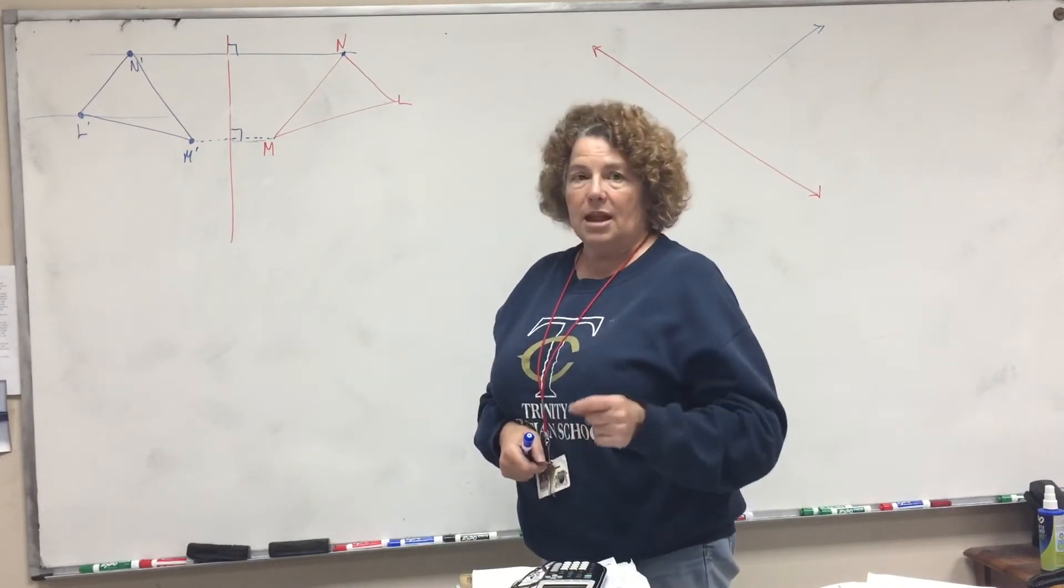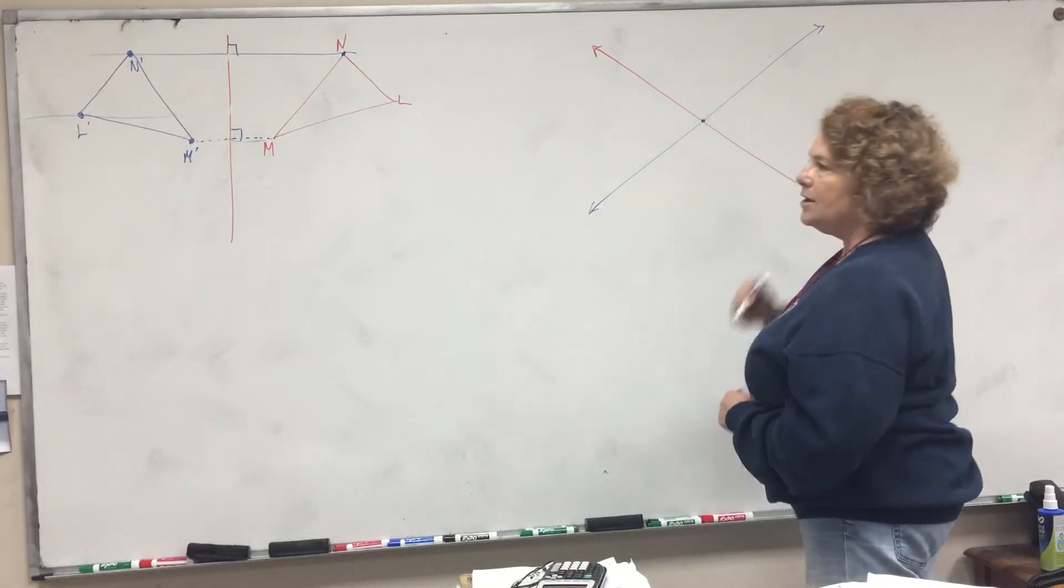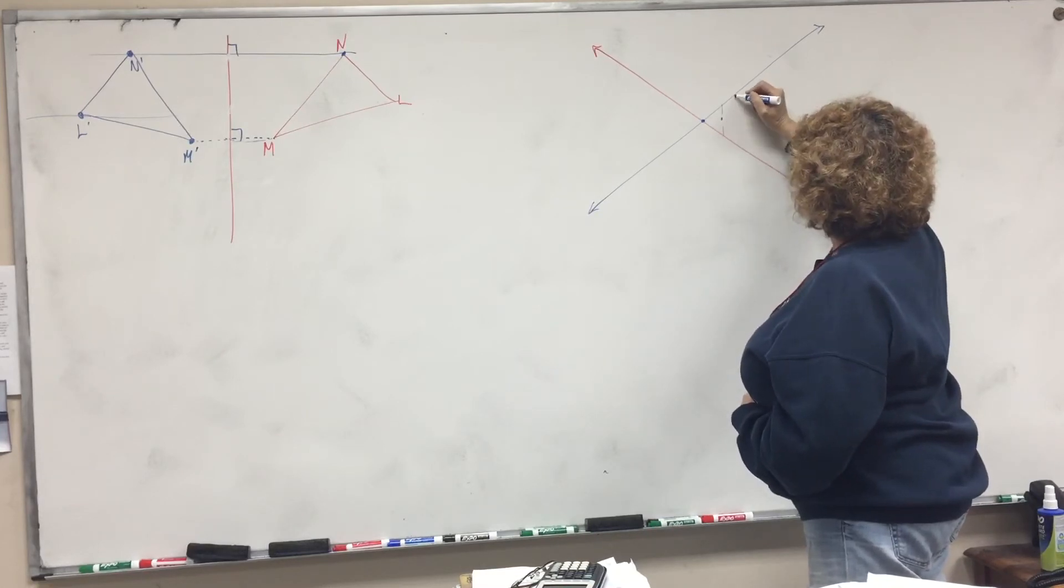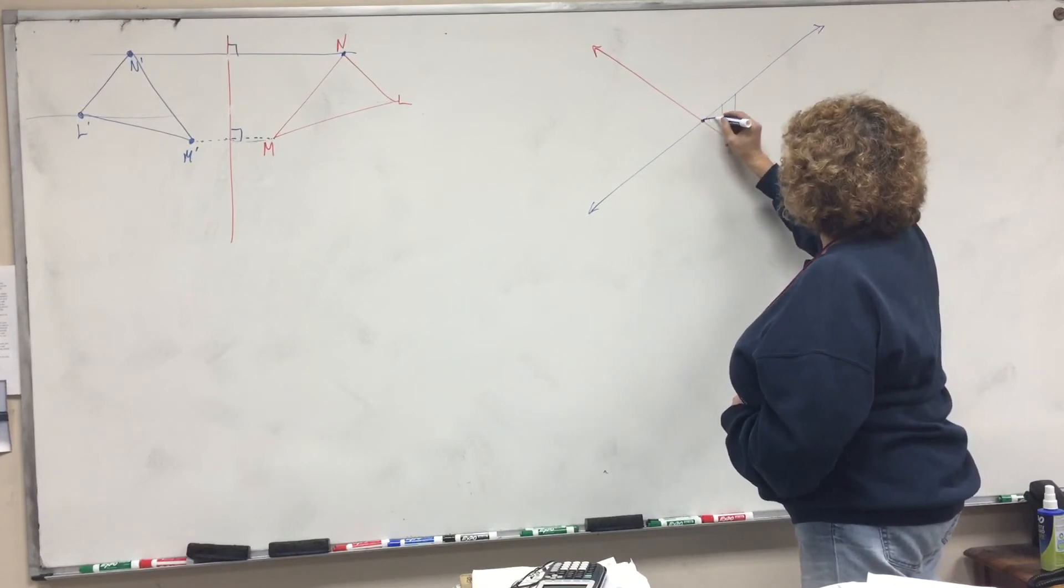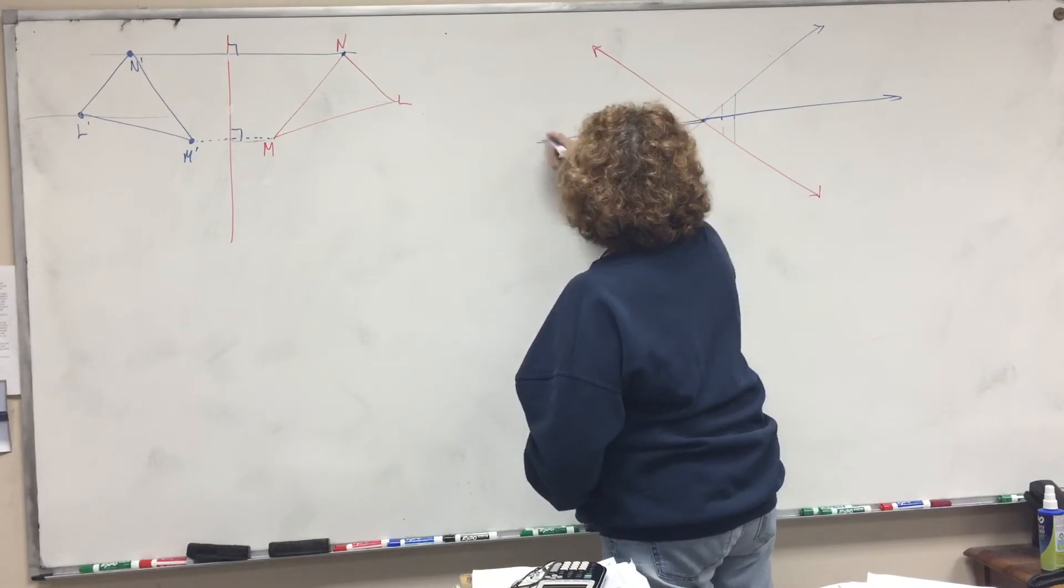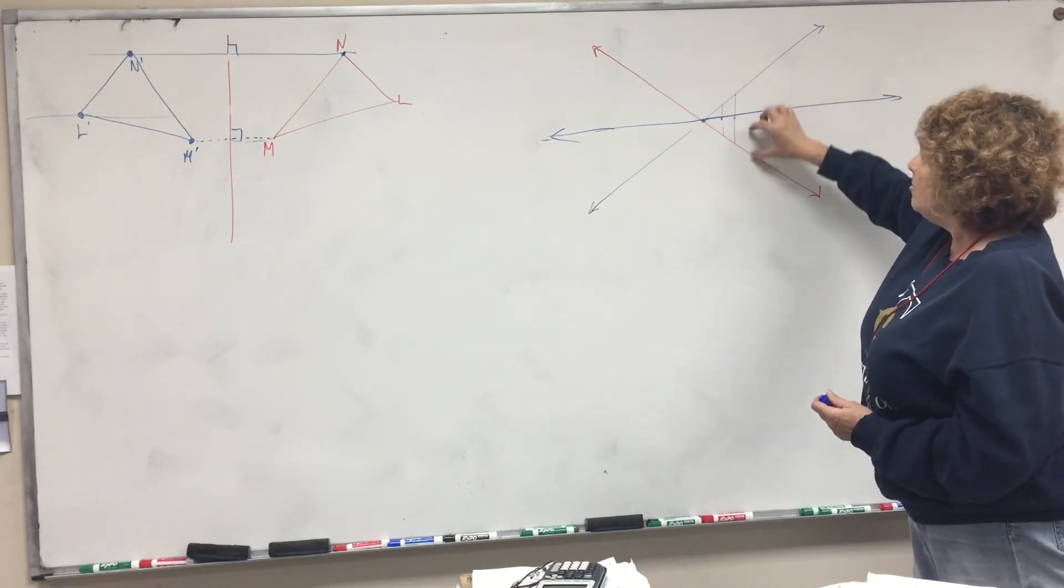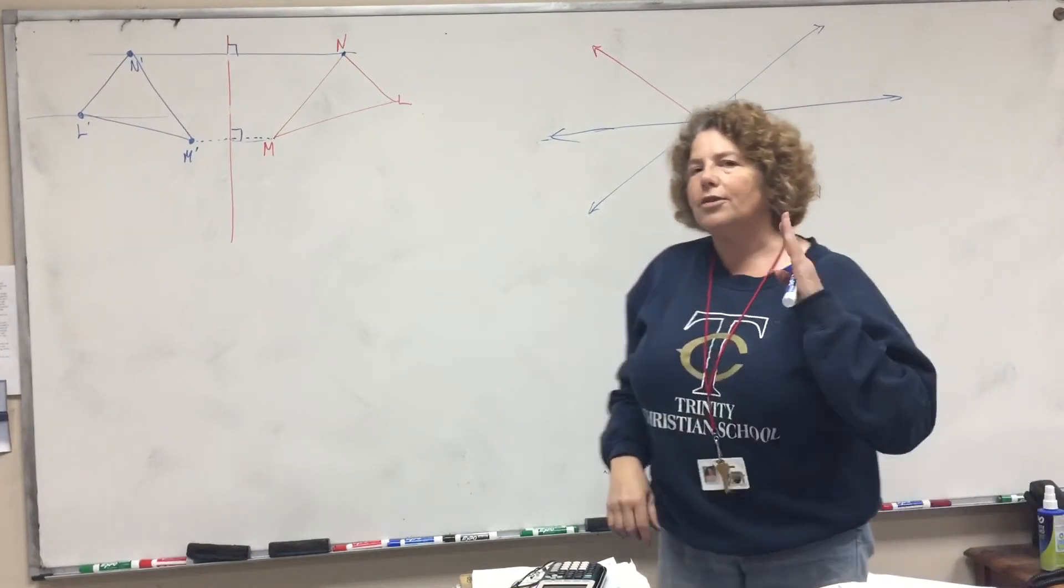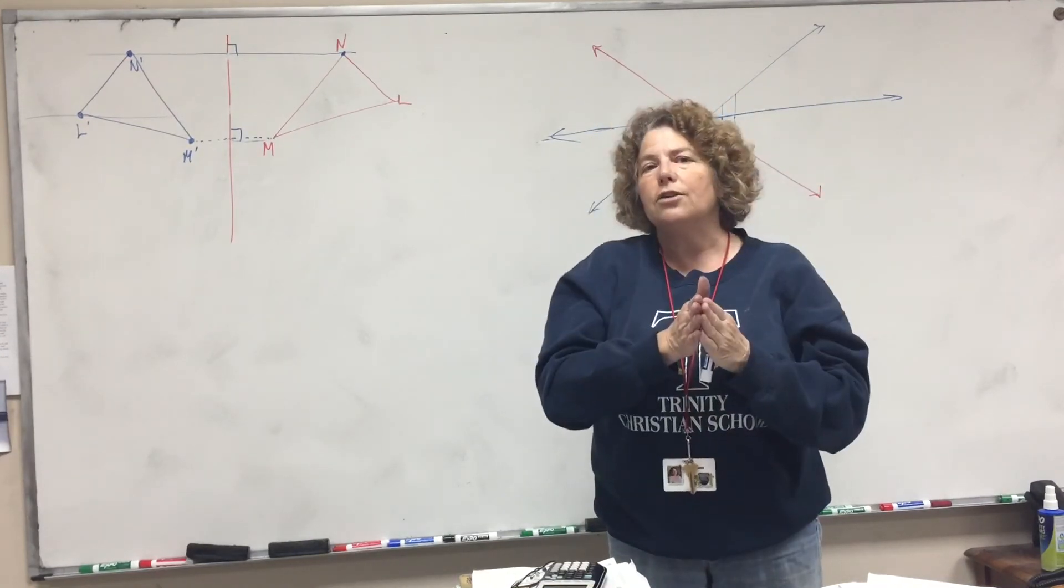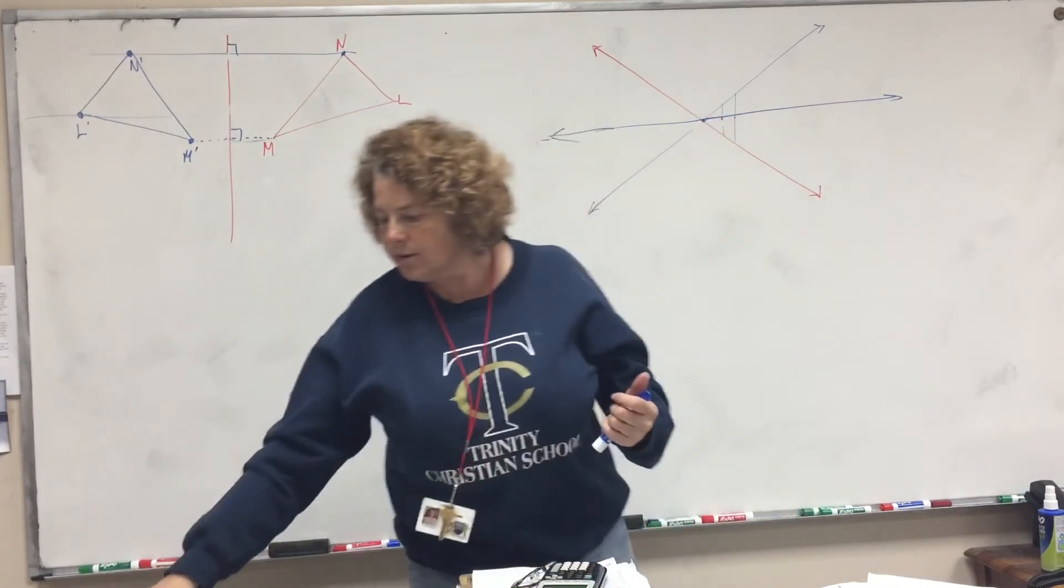If you're asked to draw the line that it's reflected around, these points are equidistant. Draw a line straight across right in the middle. The line that these two things are reflected around is equidistant from both. If you're asked to draw the line, just put something straight across so that it will be perpendicular. That's what a reflection is.